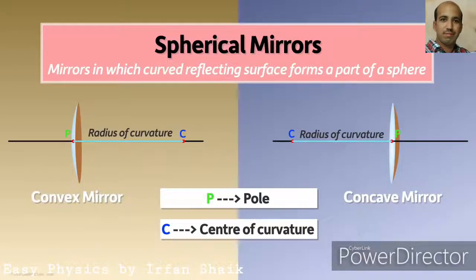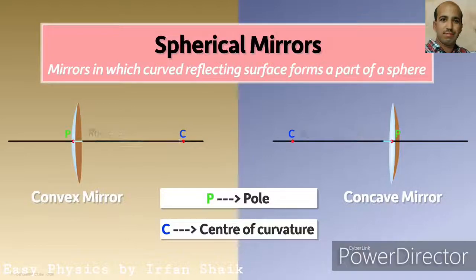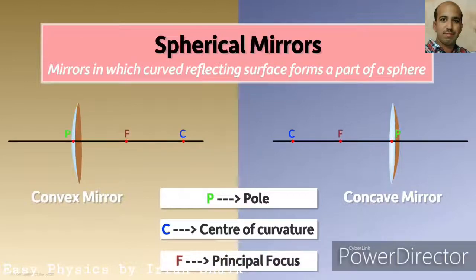For a convex mirror, the center of curvature lies at the back of the surface. The midpoint between the pole and the center of curvature is called the focus, also known as the principal focus.